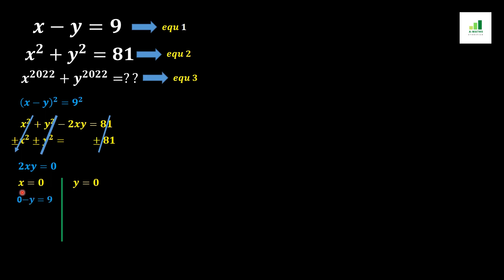When I substitute x equals 0 into equation 1, I get 0 minus y equals 9, which simplifies to y equals minus 9. So the first ordered pair for x equals 0 is (0, minus 9).